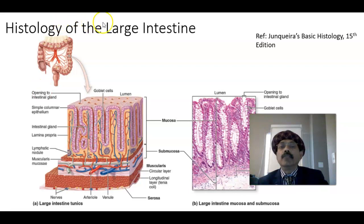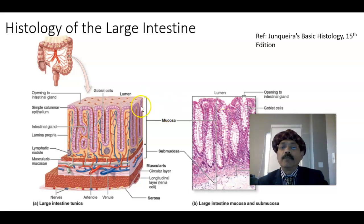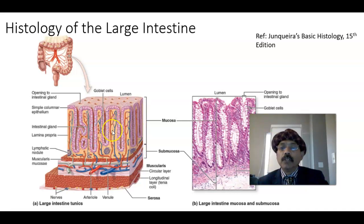So if we go to the histology of the large intestine, it has mucosa. Mucosa has three parts: the lining epithelium — this is simple columnar epithelium — and we have a lot of goblet cells. The mucosa is composed of the lining epithelium, goblet cells, and neuroendocrine cells. We have the lamina propria, which is a loose connective tissue. Then muscularis mucosa, which has two layers: inner circular layer and outer longitudinal layer.